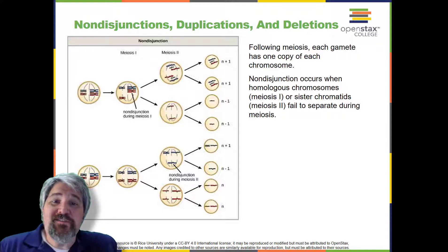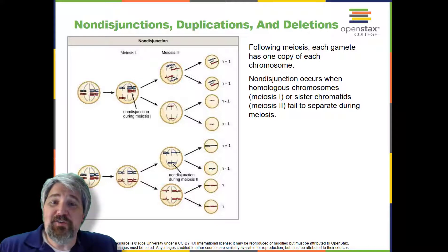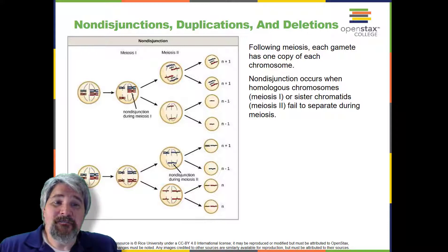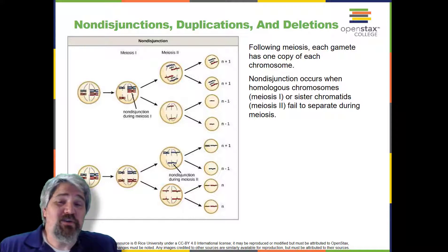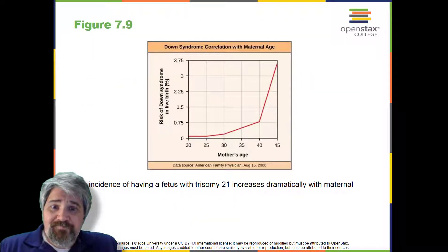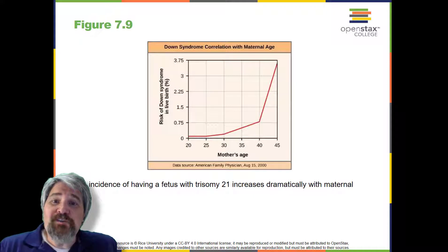The most common trisomy is that of chromosome 21, which leads to Down syndrome. Individuals with this inherited disorder have characteristic physical features and developmental delays in growth and cognition. The incidence of Down syndrome is correlated with maternal age, such that older women are more likely to give birth to children with Down syndrome, as represented in this figure.